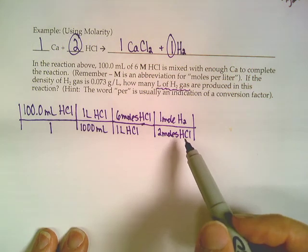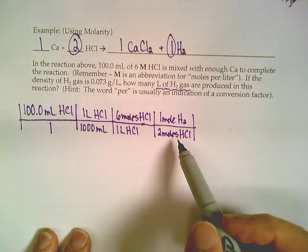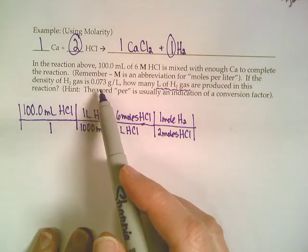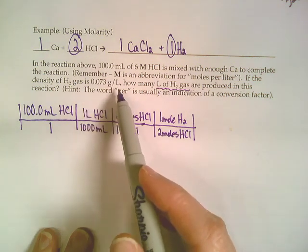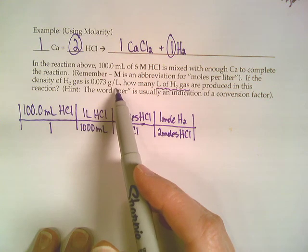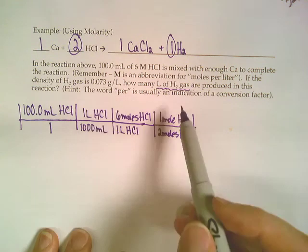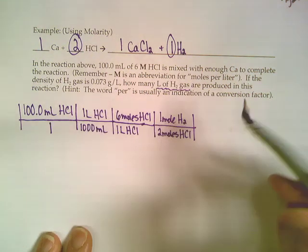So we can't use that 22.4 conversion factor. We have to get there some other way, and we have another way. It gave us this density that we could get it into liters if we were at grams. Well, we could get it into grams because we're at moles.